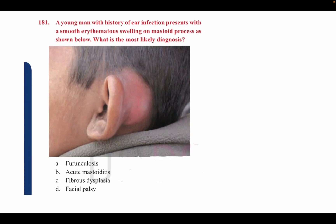A young man with a history of ear infection presents with a smooth erythematous swelling on the mastoid process as shown. What is the most likely diagnosis? Options: furunculosis, acute mastoiditis, fibrous dysplasia, and facial palsy. The right answer is acute mastoiditis. History of ear infection with smooth erythematous swelling on the mastoid process is highly suggestive of acute mastoiditis.